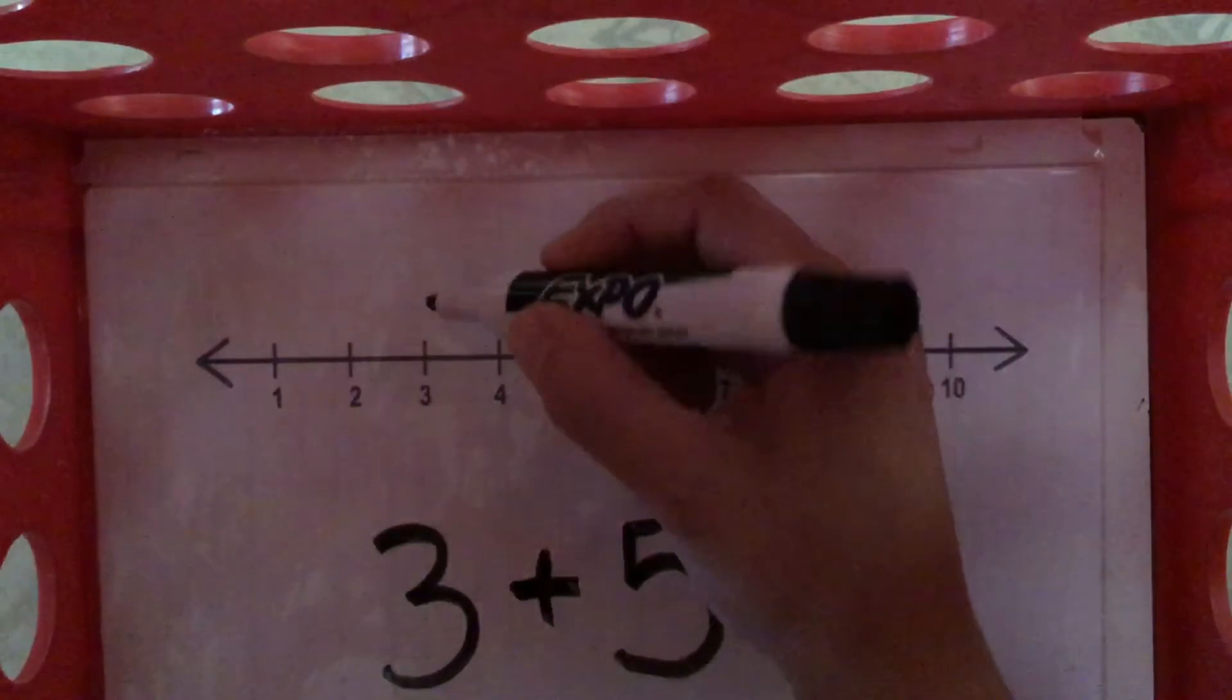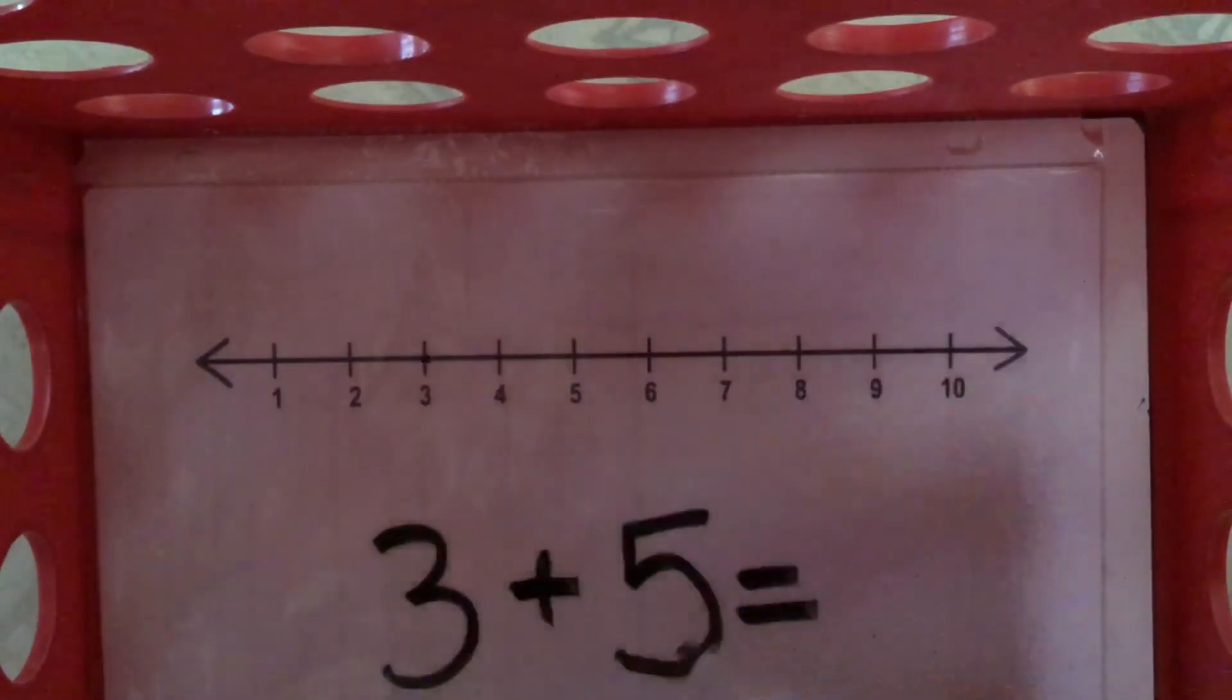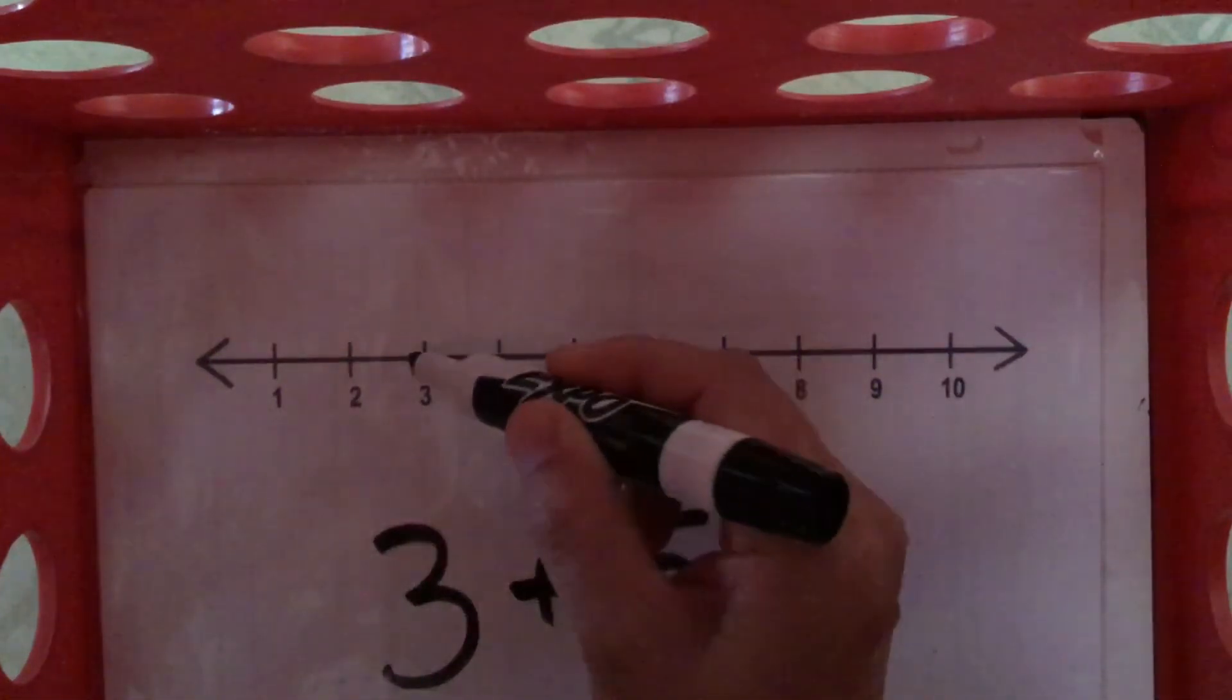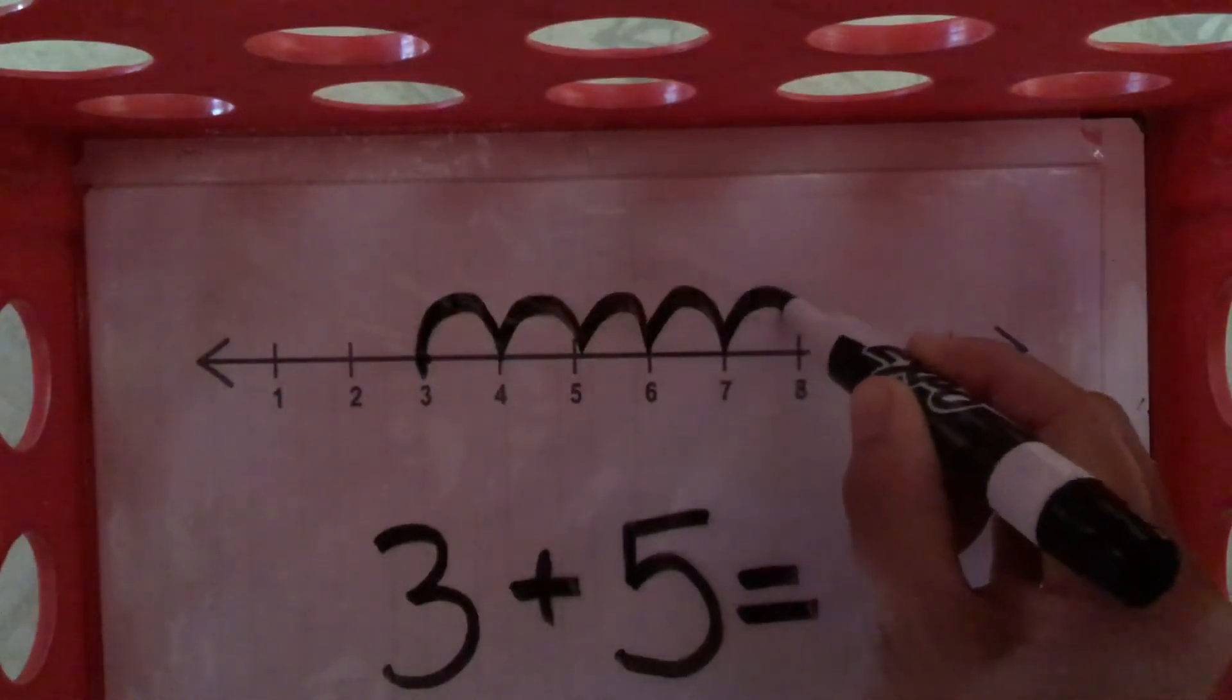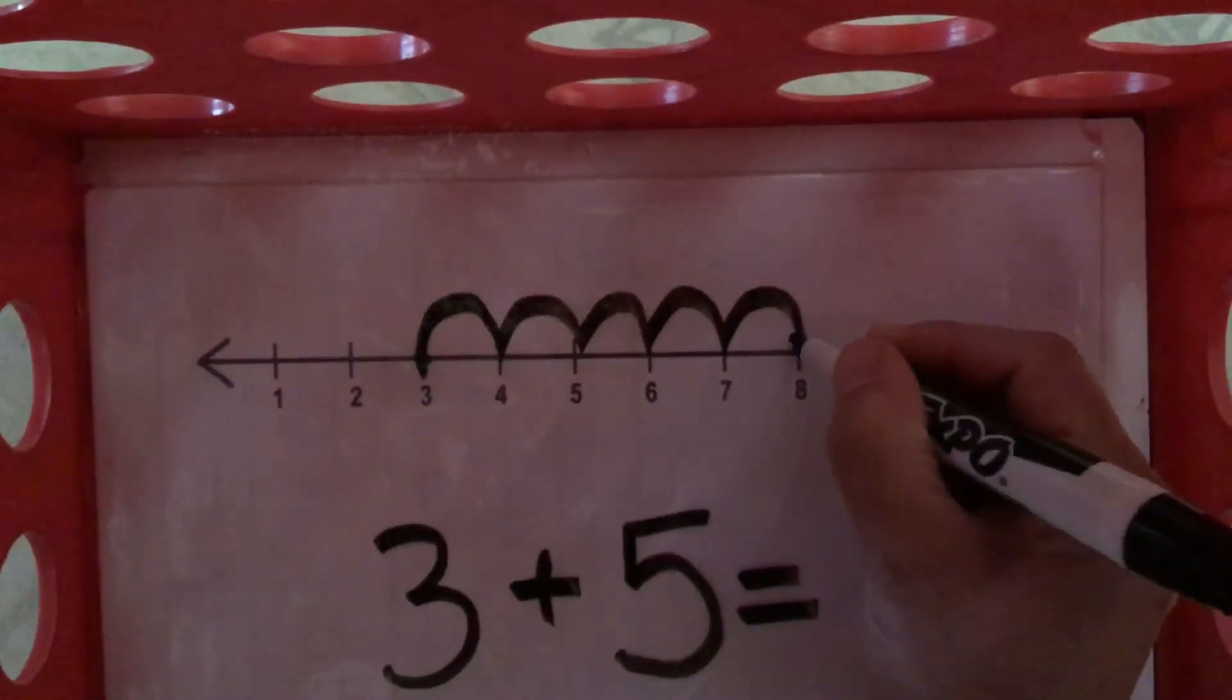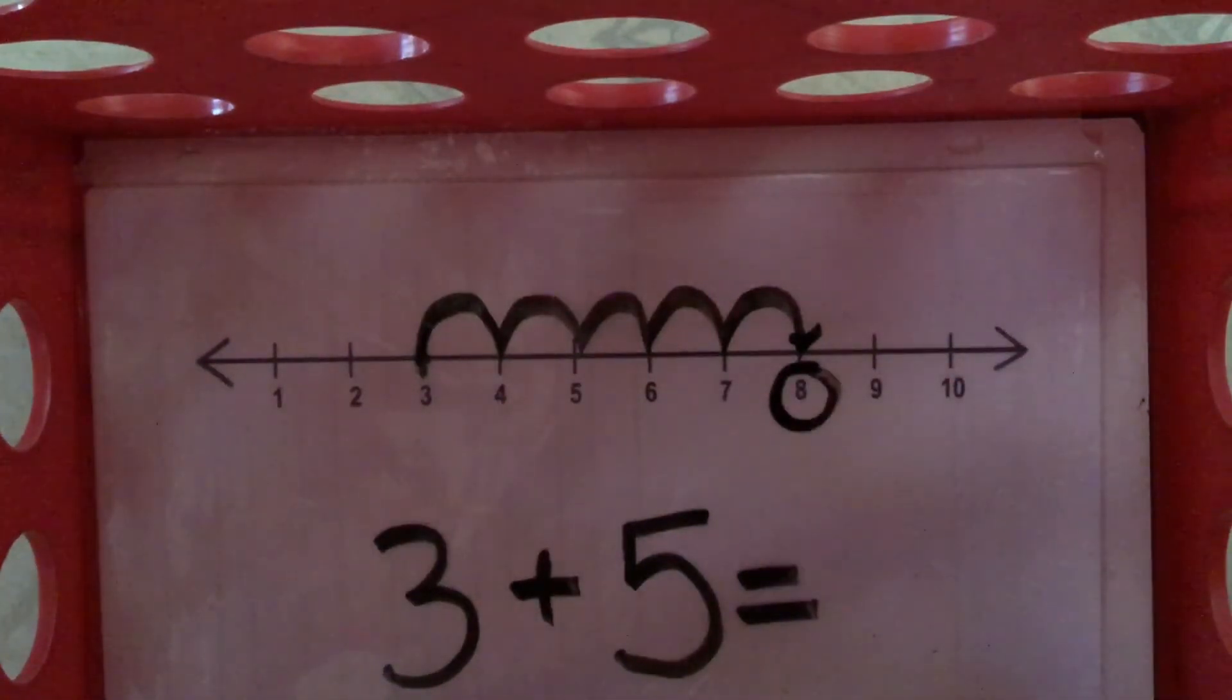Alright, so we start at 3. And we're going to jump 5 spots. This number tells us where to start. 3. And this one tells us how many spots to jump. So, here we go. 1, 2, 3, 4, 5. And this is our answer. It's pointing to the number 8. 3 apples plus 5 apples is 8 or equals 8.